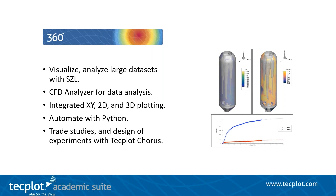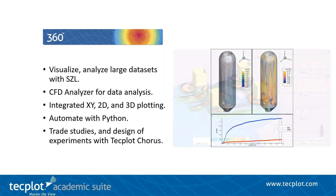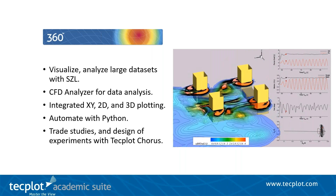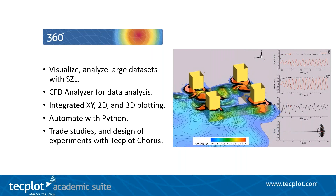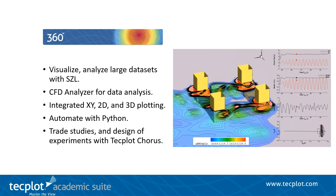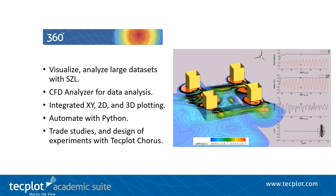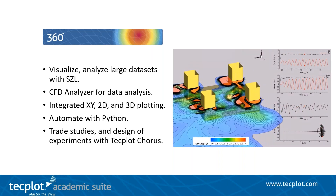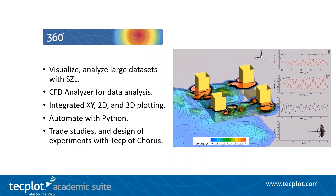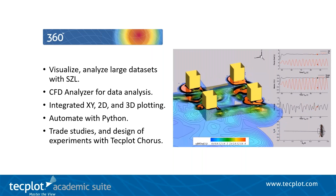The built-in CFD analyzer Toolkit also gives you the option of performing integrations, extracting key flow features such as vortex cores and shock surfaces, calculating new variables and more for additional analysis of your data. Another benefit of TechPlot 360 is the ability to not only create visually impressive 3D plots, but to also create 2D and XY plots for detailed engineering decision-making. With multiple frames, it gives you the option of viewing these different plot styles linked together in the same workspace.